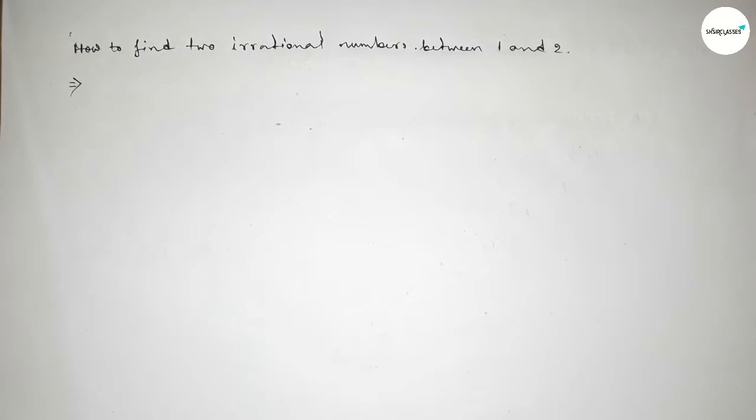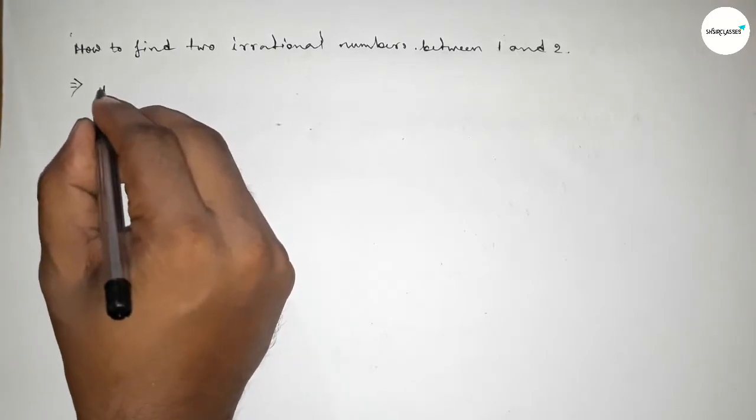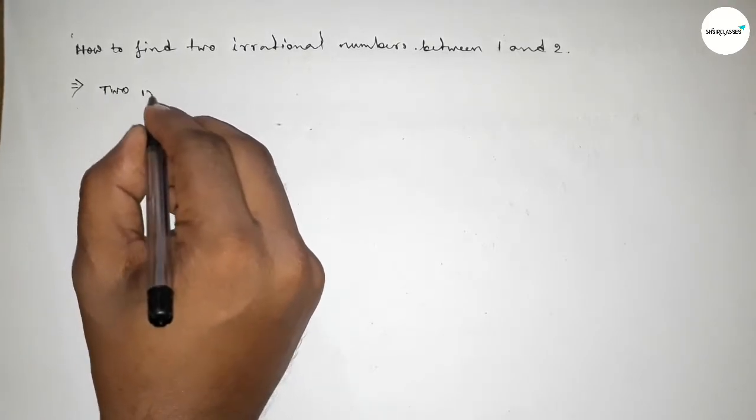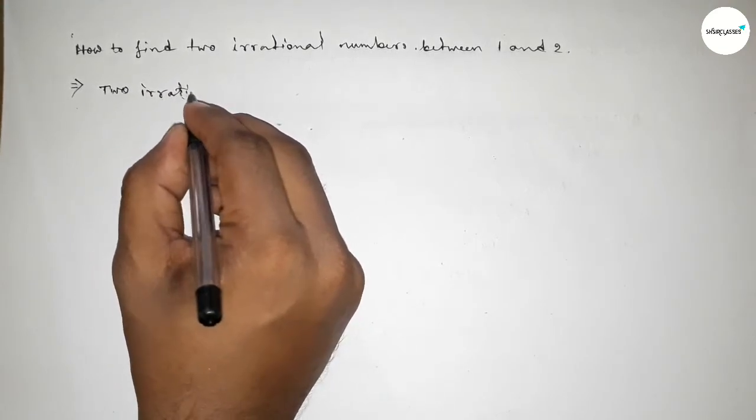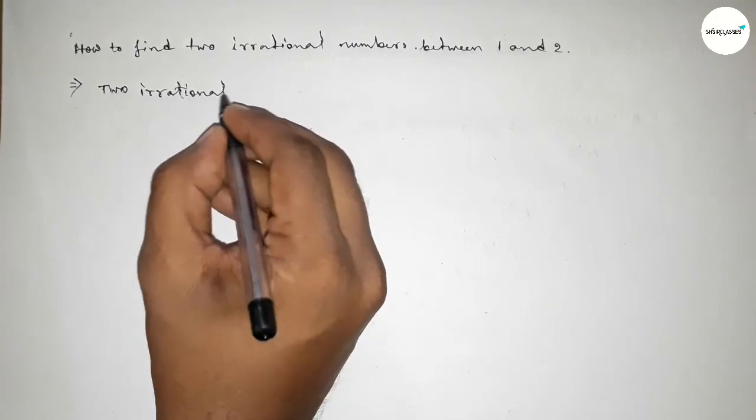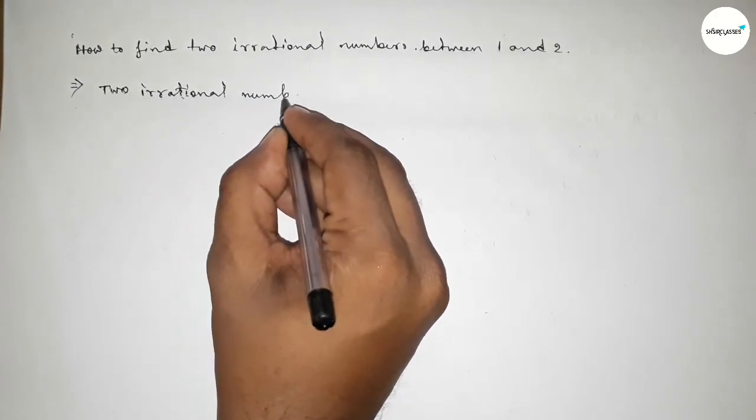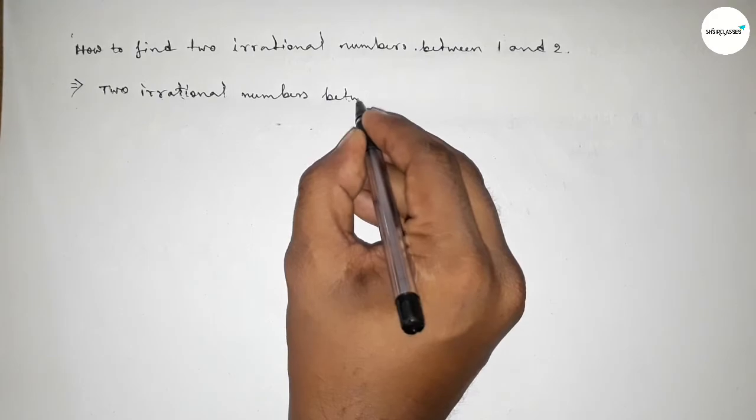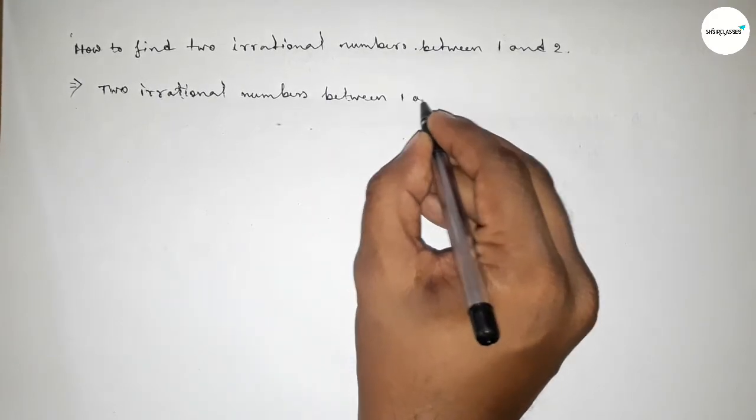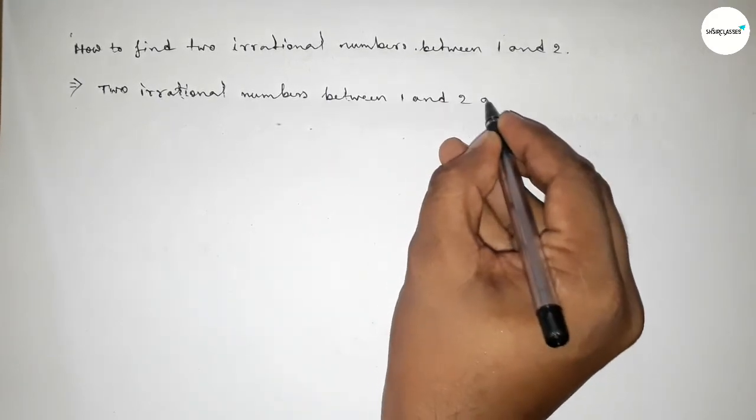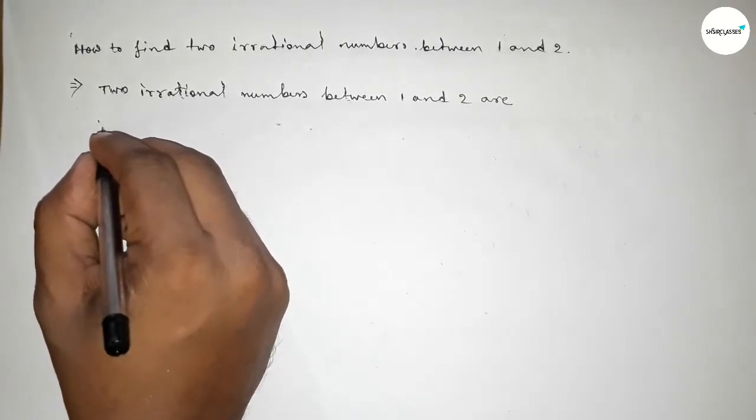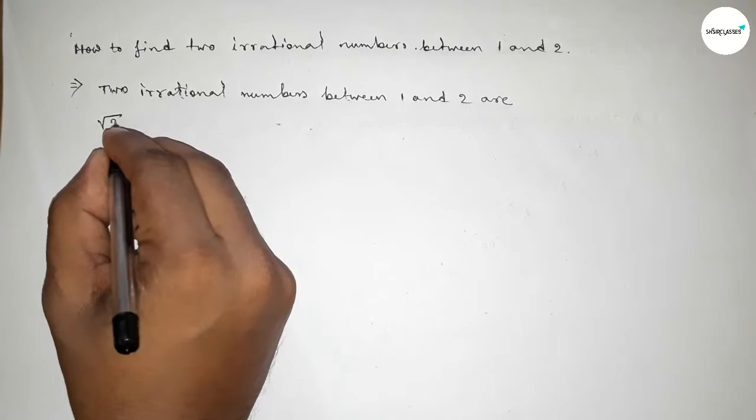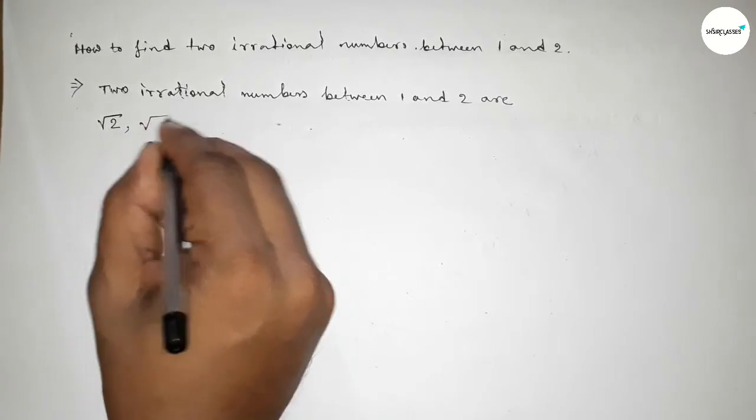Here, two irrational numbers between 1 and 2 are: the first one will be √(1 × 2), that's mean √2, and the second irrational number...